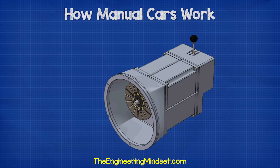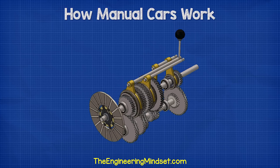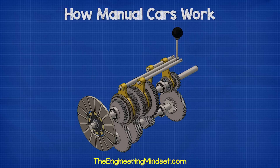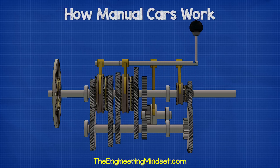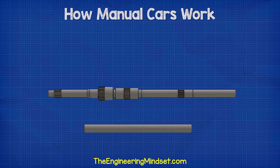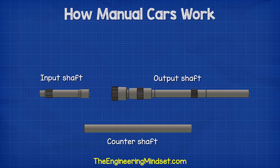First of all, we have the main housing. This will protect all the internal components and hold them in place. Looking inside, we have the input shaft, the output shaft, and a countershaft.